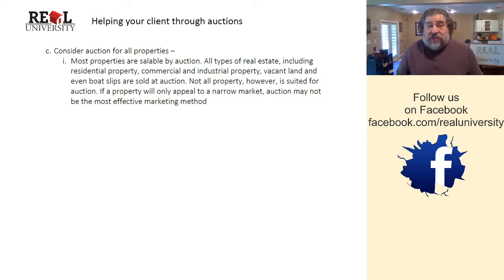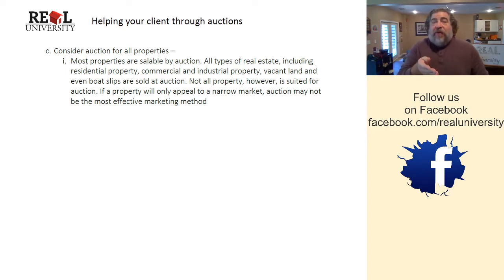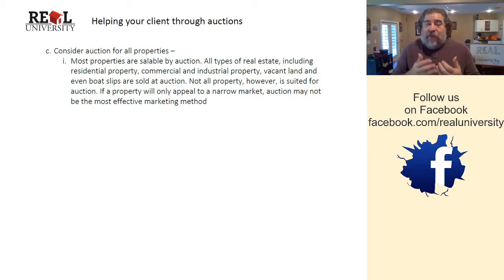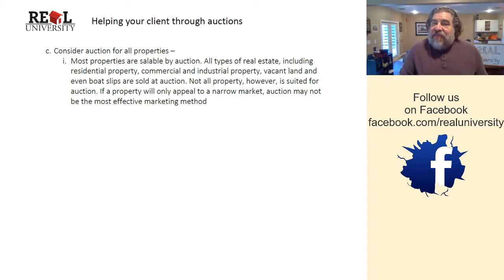However, there is one type of property that is probably not well suited for auction — what we call the white elephant, or a unique property with a very narrow group of buyers. Now, some unique properties may have a narrow buyer pool but are still very desirable, so I want to contrast the two. If you get a property that is unique but the buyers are narrow, that is probably the key indicator that it's not a good auction property.